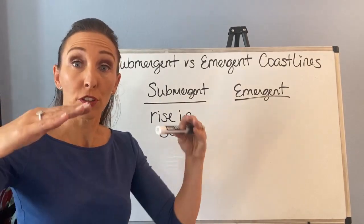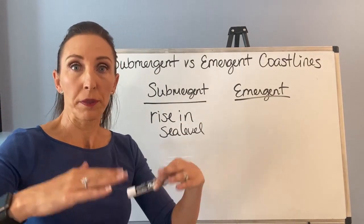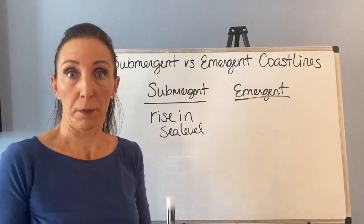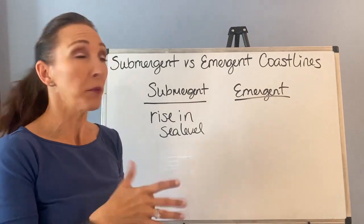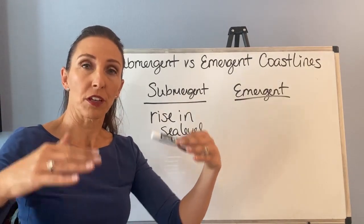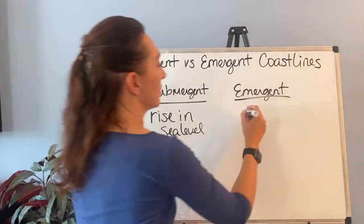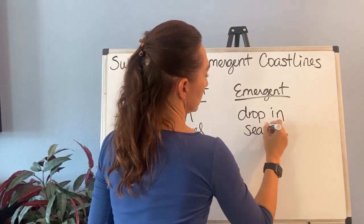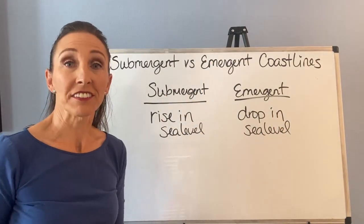Conversely, if we were to lower sea level, it would appear that the land was emerging out of that. So our emergent coastline is a result of dropping sea level.